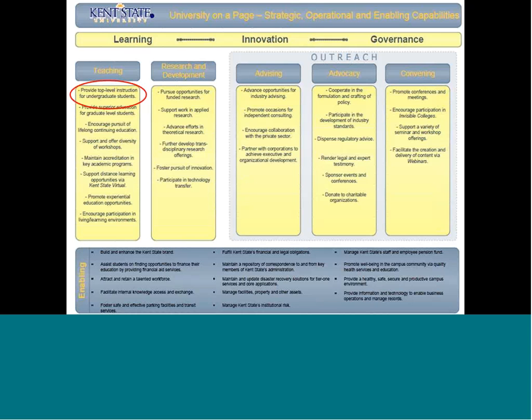At the bottom of the page you can see some enabling capabilities. Enabling capabilities are pretty standard across most organizations. We would essentially see marketing — building and enhancing the Kent State brand — financial aid services, attracting and retaining a talented workforce (which essentially translates to HR), fulfilling financial and legal obligations, managing technology, managing facilities, property and other assets, managing risk, managing employee and staff pension funds, and safety and security under the well-being of the campus community. These standard capabilities support and ensure that the institution can function each day.